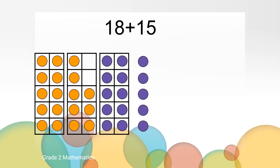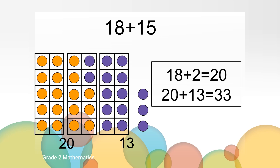18 is only 2 away from 20. I know getting to the next friendly number makes it easier to add the numbers. If I had 18 and added 2 from the 15, that would give me 20. Then I have 13 left and I know 20 and 13 equals 33. What equations would match what we just did? I started with 18 plus 2 to get me to 20, then I had 20 and added 13 more, and that equals 33.